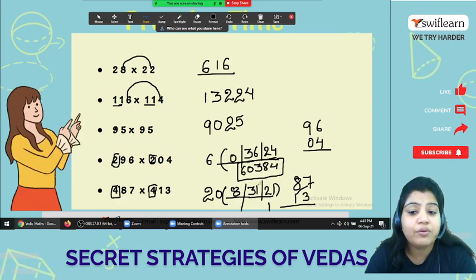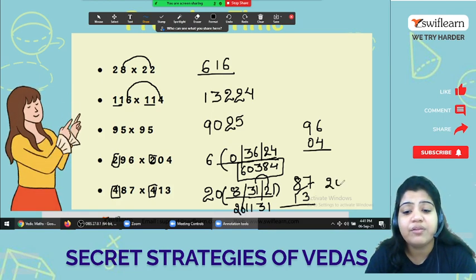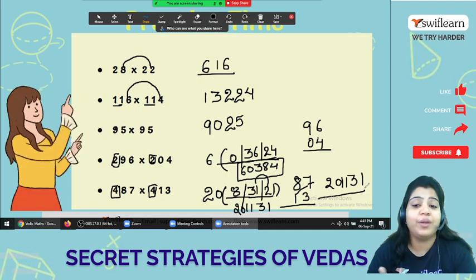Now 1. So this one goes here. So 31 plus 2, 33. And this goes here 11. And 2, 0. So your final answer is 2, 0, double 1, 3, 1. I hope this part is clear to everyone.